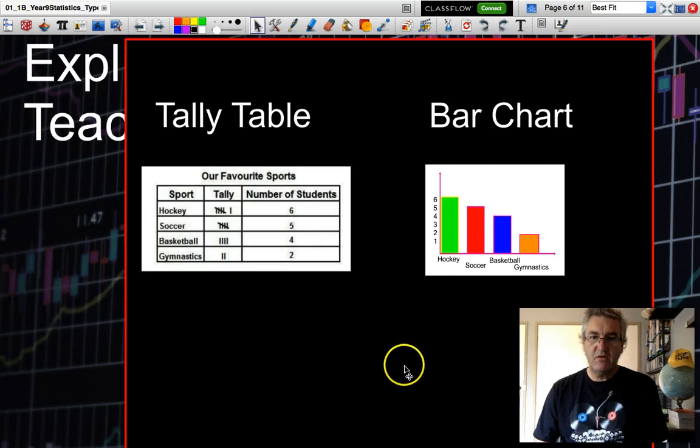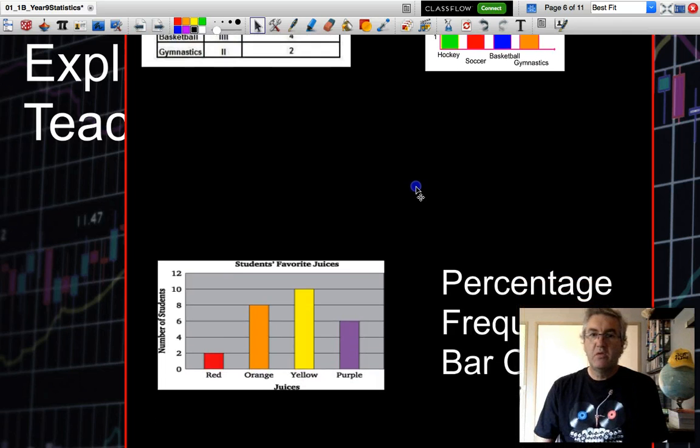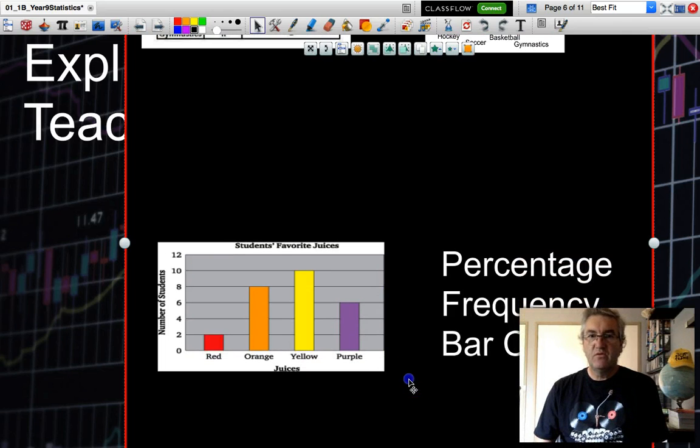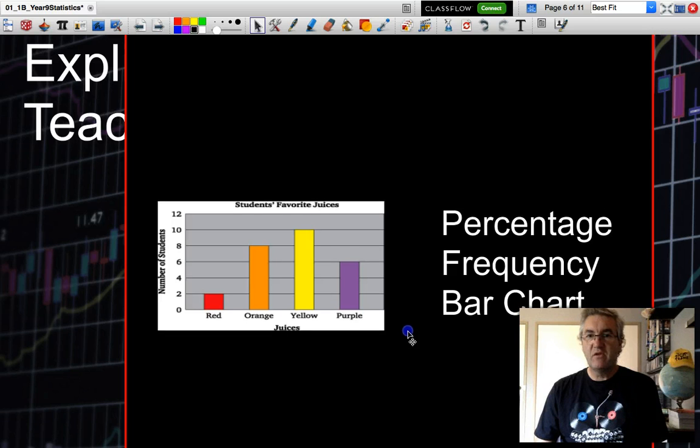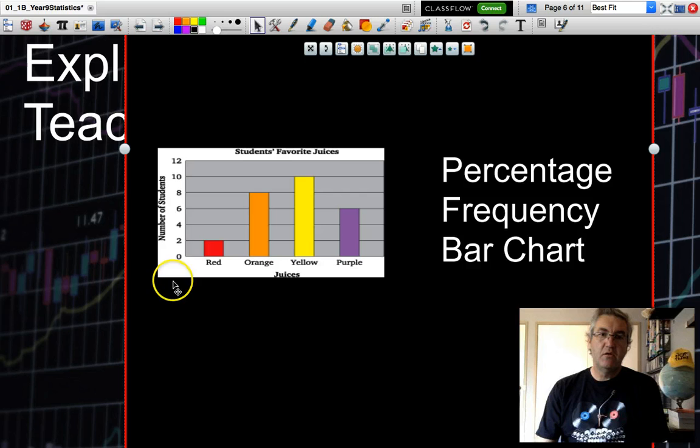Now, a bar chart can also be transferred to a percentage frequency bar chart. Whereas on the vertical column where we have the number of students or our frequency, instead of putting the absolute numbers, which could get quite big if we're looking into the millions, we actually put in a percentage.